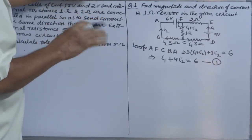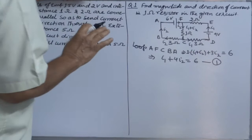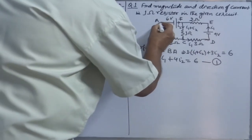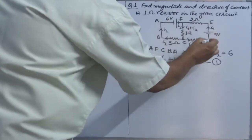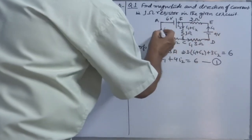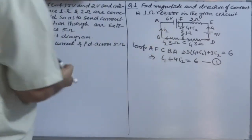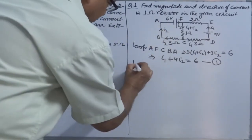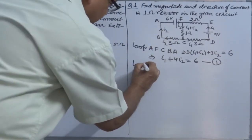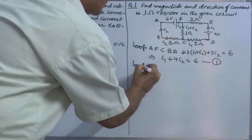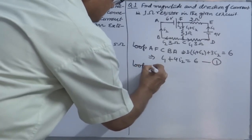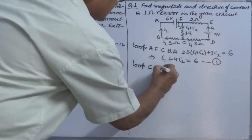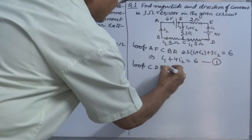You can also choose a third loop, such as AEDDA, as three loops is the minimum you can take, but two are sufficient. The second loop I am choosing is CDEFC.